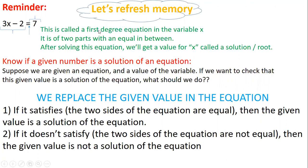First-degree equation means the exponent of x is 1. When we have no exponent written, this means that the exponent is 1. So directly I say this is called a first-degree equation in the variable x.